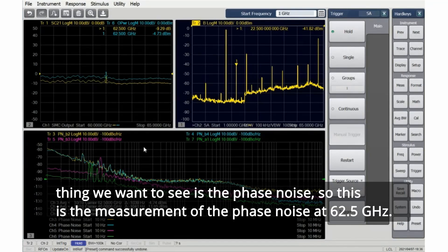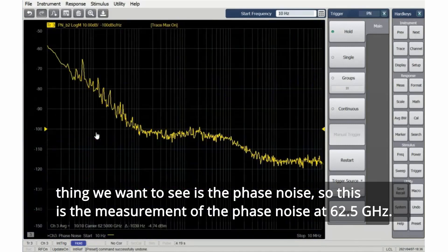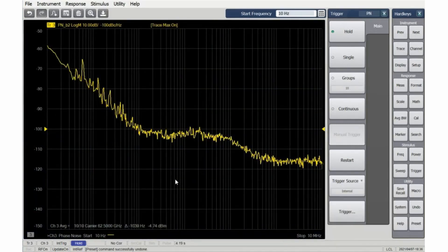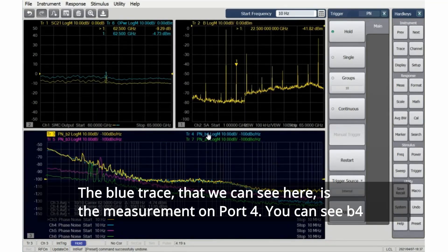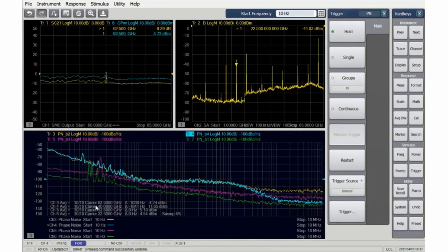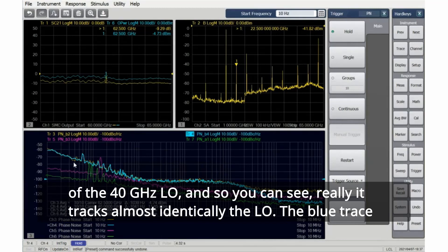Finally, the interesting thing we want to see is the phase noise. This is the measurement of the phase noise at 62 and a half gigahertz. The blue trace that we can see here is the measurement on port 4 of the 40 gigahertz LO, and you can see it tracks almost identically to the LO.